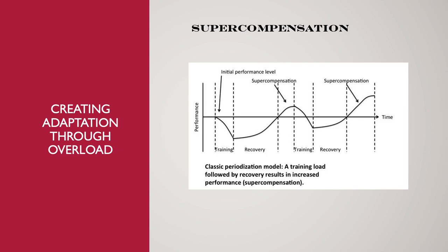This image illustrates supercompensation — creating adaptation through overload. We have an initial performance level, we train, it beats us down, we recover and come back up with a supercompensation effect. We train again, go down again, but that diminishing point is actually higher than in the first cycle. When we rebound after recovery, we supercompensate at a higher rate and it continues to build. This is great in theory — it has limiting factors and never works this beautifully — but theoretically this is what you want in mind.